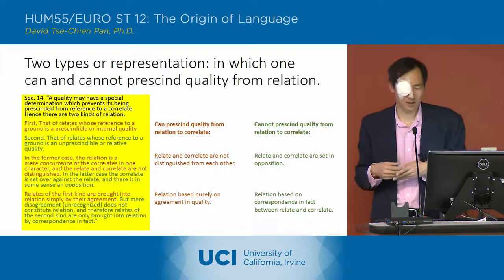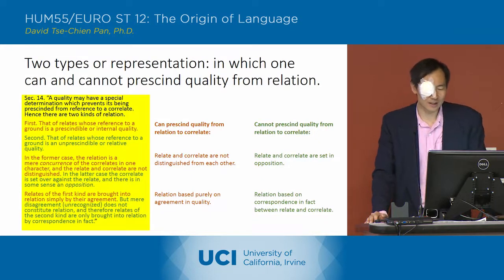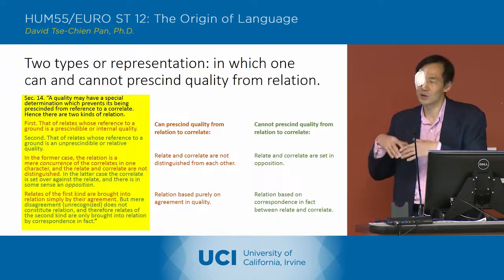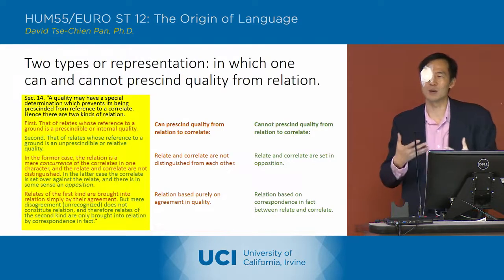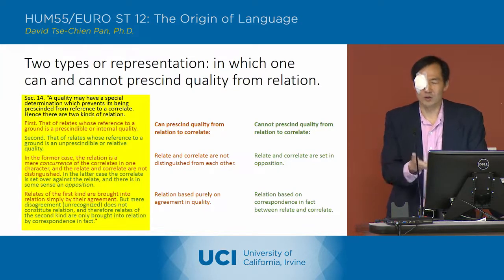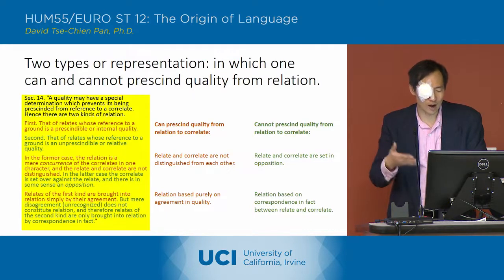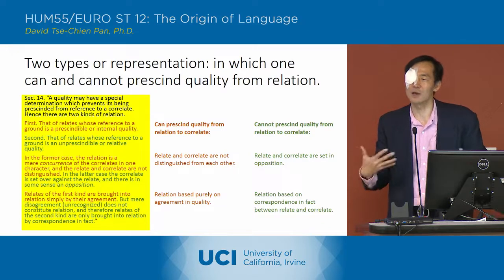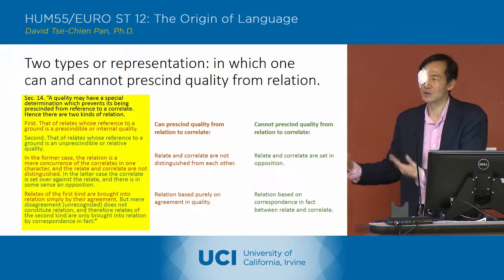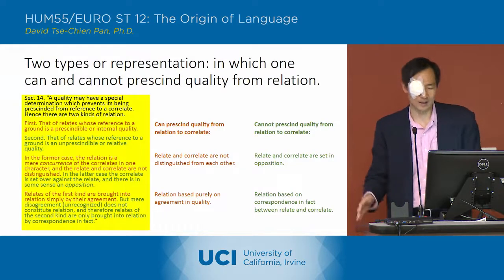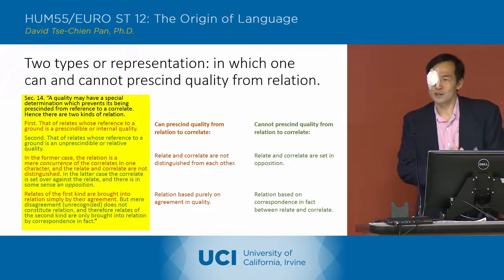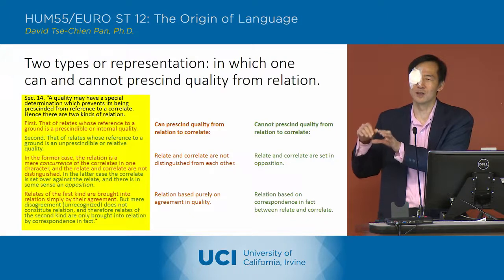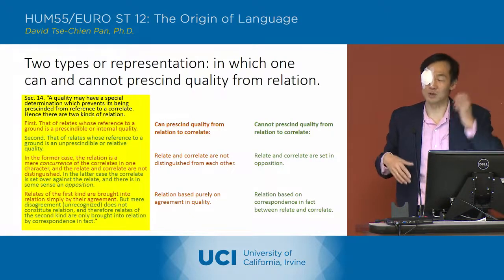The first type, which I've put in brown, is what he eventually calls a likeness. The characteristic is that you can prescind quality from relation to correlate — meaning you don't need to know about the relationship to the correlate to use this type of sign. The relate and correlate are not distinguished from each other, so the relation is purely based on agreement in quality, prescinding from any difference between relate and correlate.